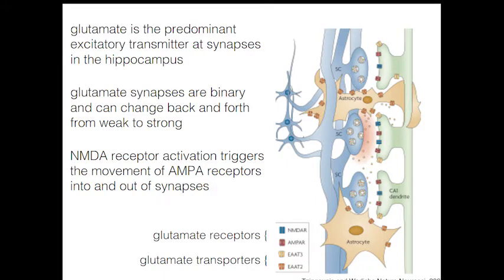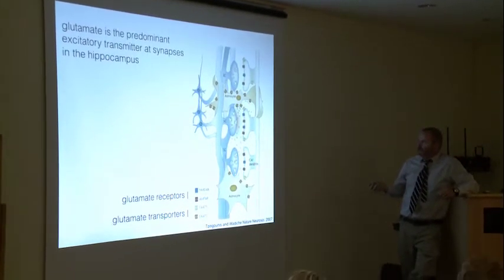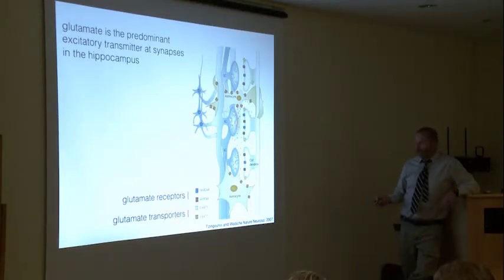Glutamate is the predominant excitatory transmitter at synapses in the brain and in the hippocampus. This cartoon shows some of the relevant molecules involved in synaptic transmission at the Schaffer collateral CA1 synapse. These Schaffer collateral axons from area CA3 project through that layer and make en passant synapses on dendrites in CA1. Glutamate is released presynaptically, and postsynaptically we have NMDA and AMPA receptors that mediate the synaptic responses. Also shown here are some of the glutamate transporters — in particular EAAT2, excitatory amino acid transporter number 2 — the most abundant glutamate transporter in brain, expressed primarily on astrocytes.